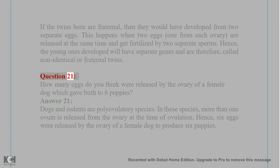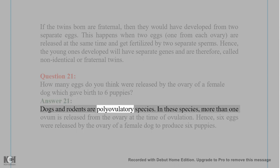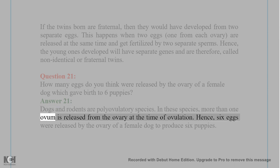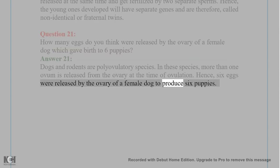Question 21: How many eggs were released by the ovary of a female dog which gave birth to six puppies? Answer 21: Dogs and rodents are polyovulatory species. In these species, more than one ovum is released from the ovary at the time of ovulation. Hence, six eggs were released by the ovary of a female dog to produce six puppies.